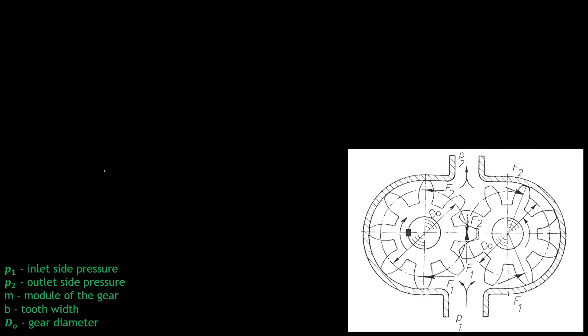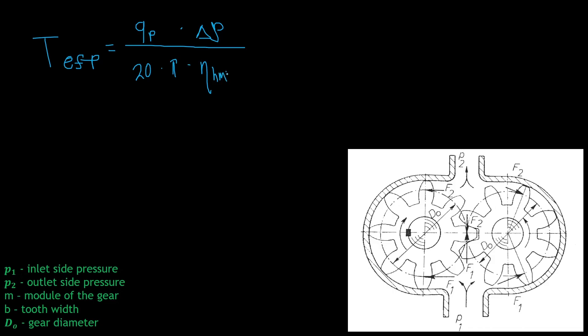If you remember the lesson on efficiency factors from my other course: to get the effective torque for a pump, we relocate the efficiency factor to the denominator. The effective torque for pumps equals the specific flow of the pump times the achieved pressure difference, divided by 20 times pi times the hydromechanical efficiency of the pump. The efficiency factor is in the denominator because we need more torque to overcome losses. If you don't remember, go back and download the lesson on efficiency factors.